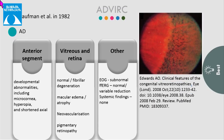Another bestrophinopathy is autosomal dominant vitreoretinochoroidopathy (ADVIRC). It is an autosomal dominant disease with anterior segment developmental abnormalities including microcornea and hyperopia. The vitreous can be normal or fibrillar. On fundus examination, there is a well-circumscribed pigmented peripheral retinal degeneration starting from ora serrata to the equator. The EOG is subnormal and full-field ERG can be normal with variable reduction.